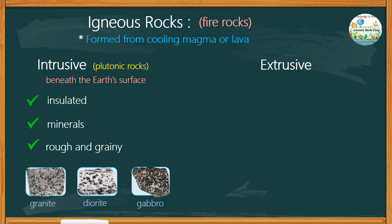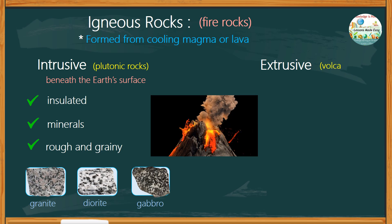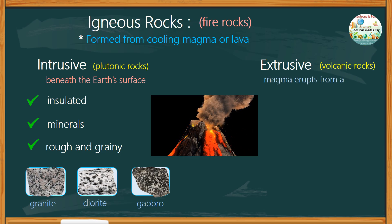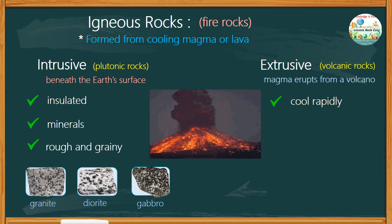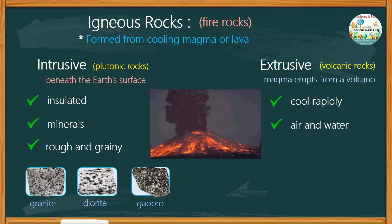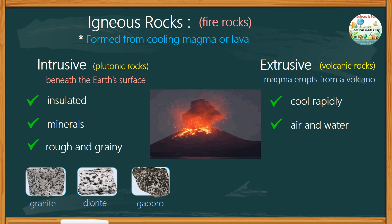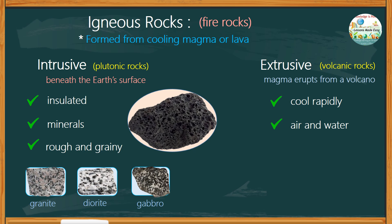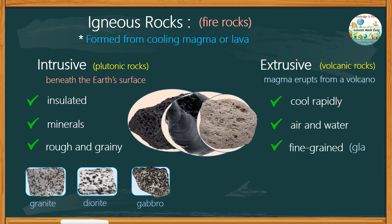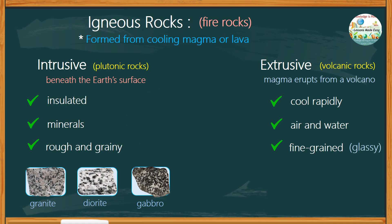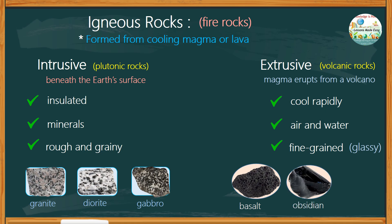On the other hand, extrusive igneous rocks, also called volcanic rocks, are formed when magma erupts from a volcano or fissures and cools rapidly on the Earth's surface. When magma reaches the surface, it becomes lava. Unlike intrusive rocks, which cool slowly underground, extrusive rocks cool quickly because they are exposed to air and water. Lava cools quickly, sometimes within minutes to days. This rapid cooling prevents large crystals from forming, resulting in fine-grained or glassy texture. Examples of extrusive igneous rocks are basalt, obsidian, and pumice.